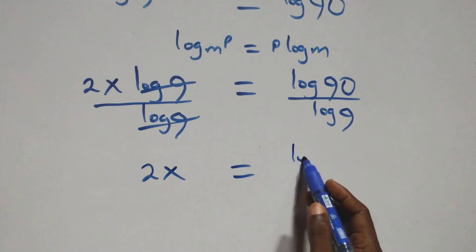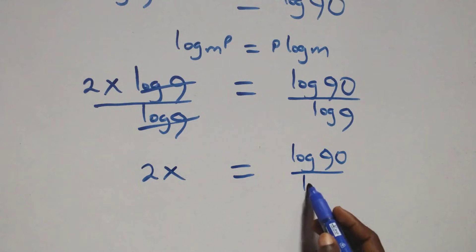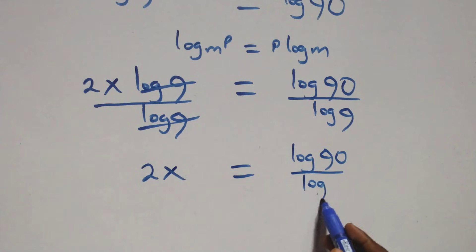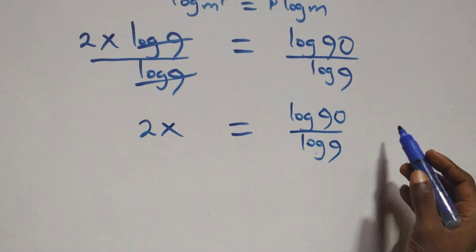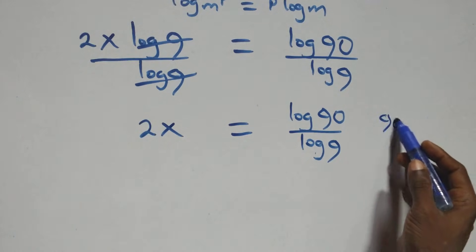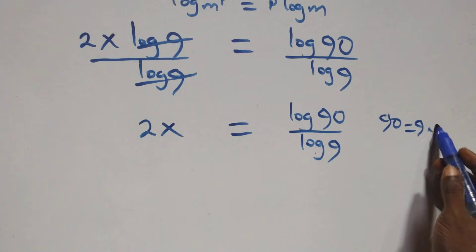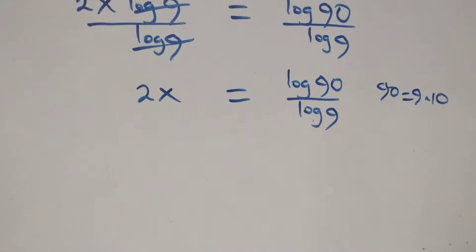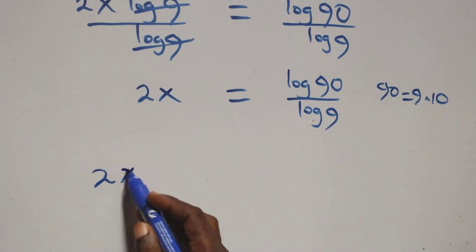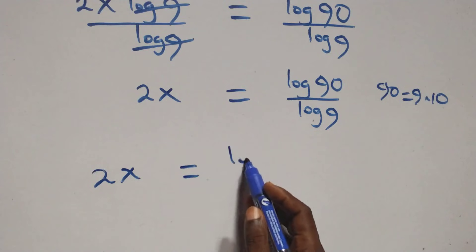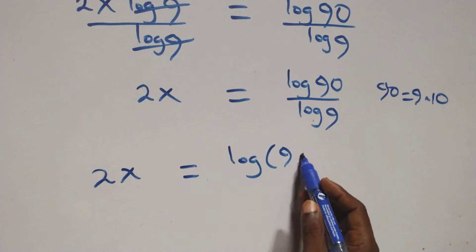We have 2x equals to log 90 over log 9. Then from here we can write 90 as 9 times 10, so this becomes 2x equals to log of 9 times 10, over log 9.